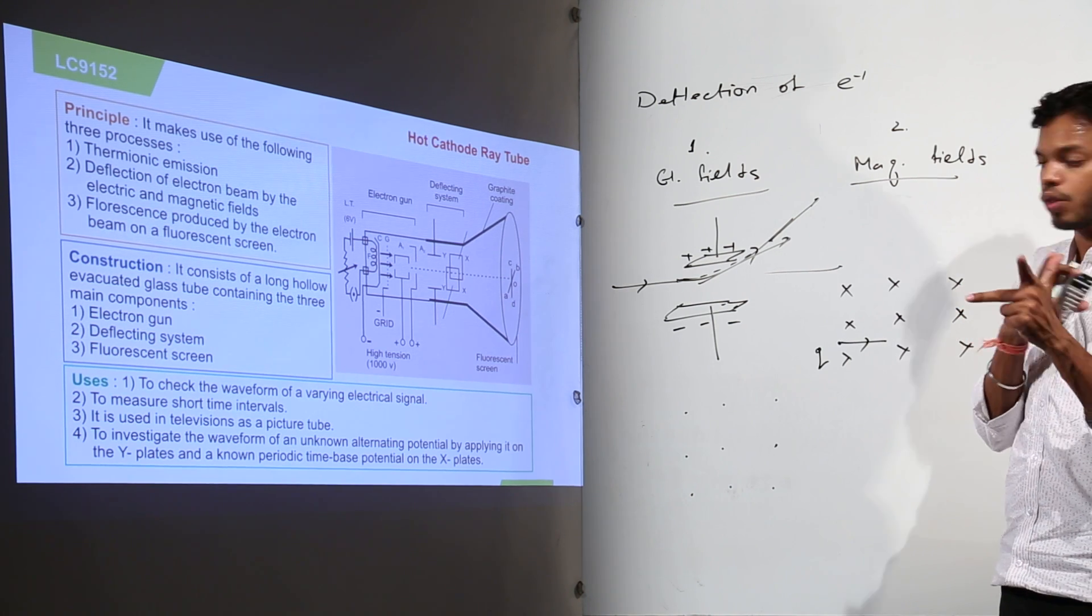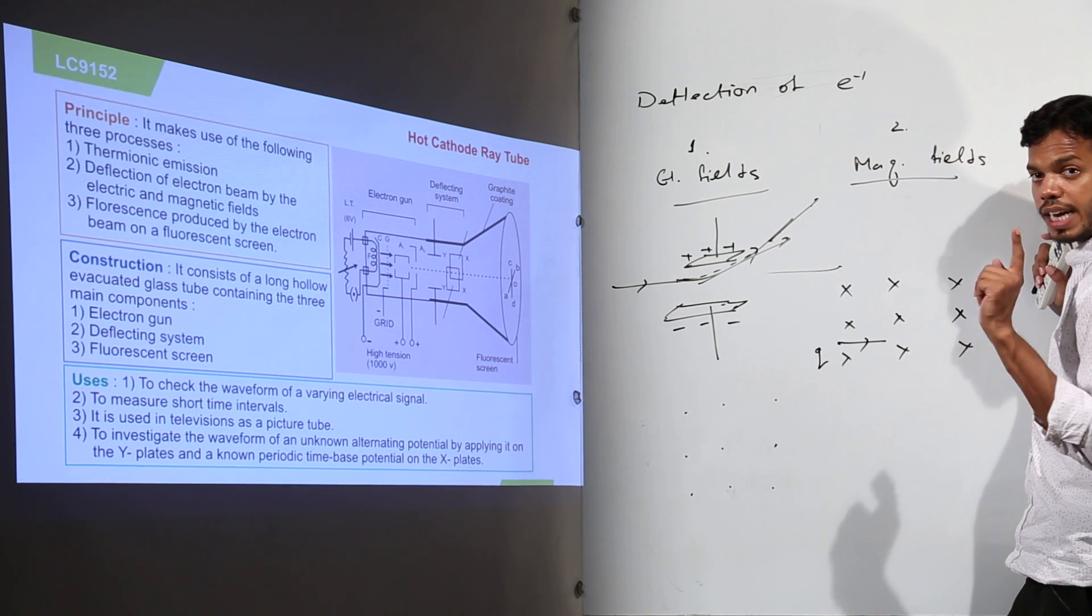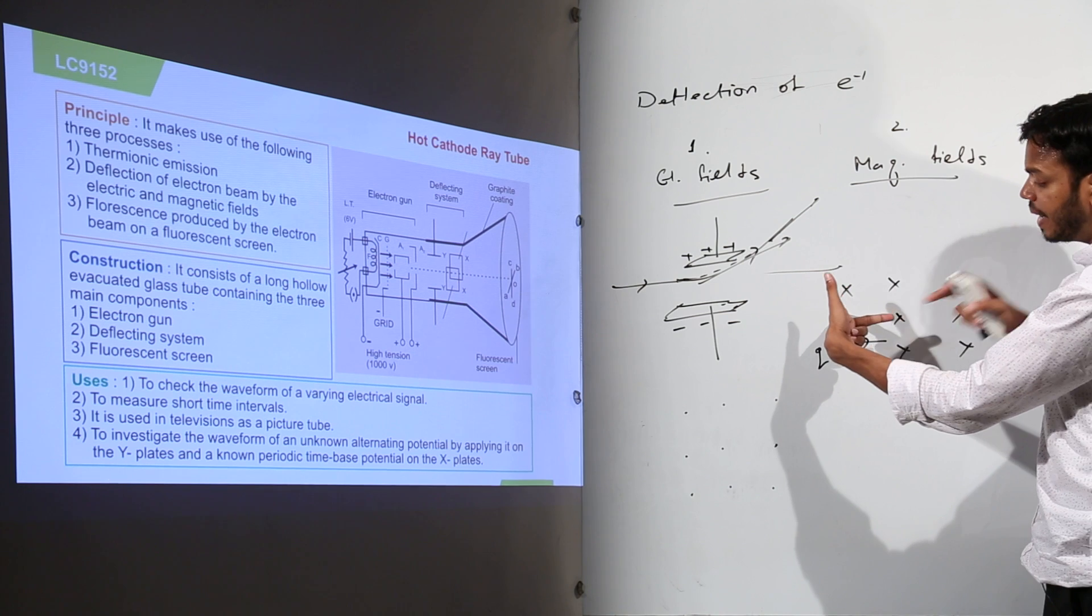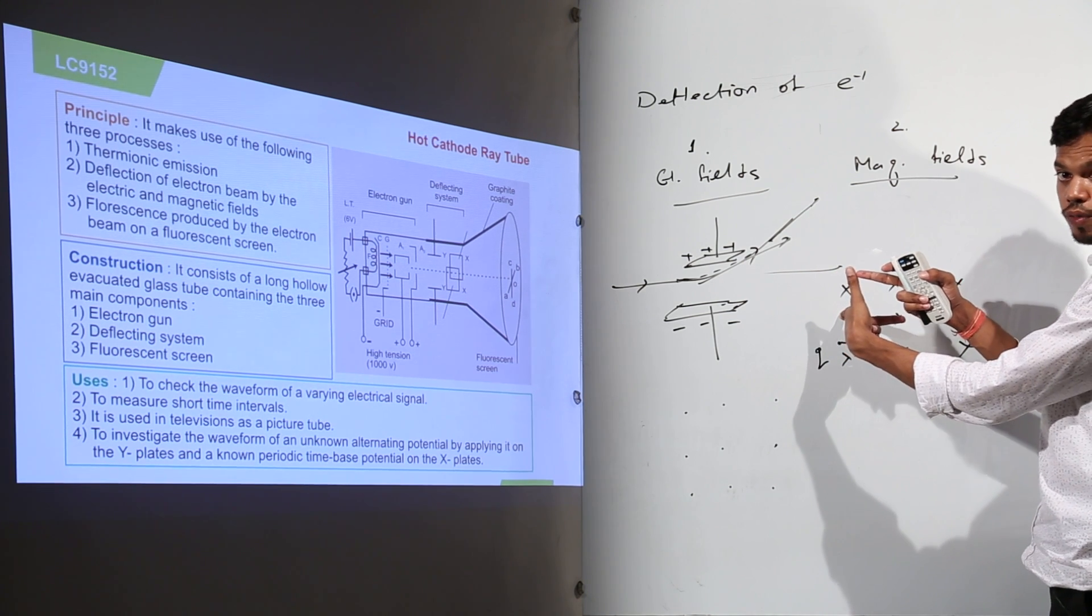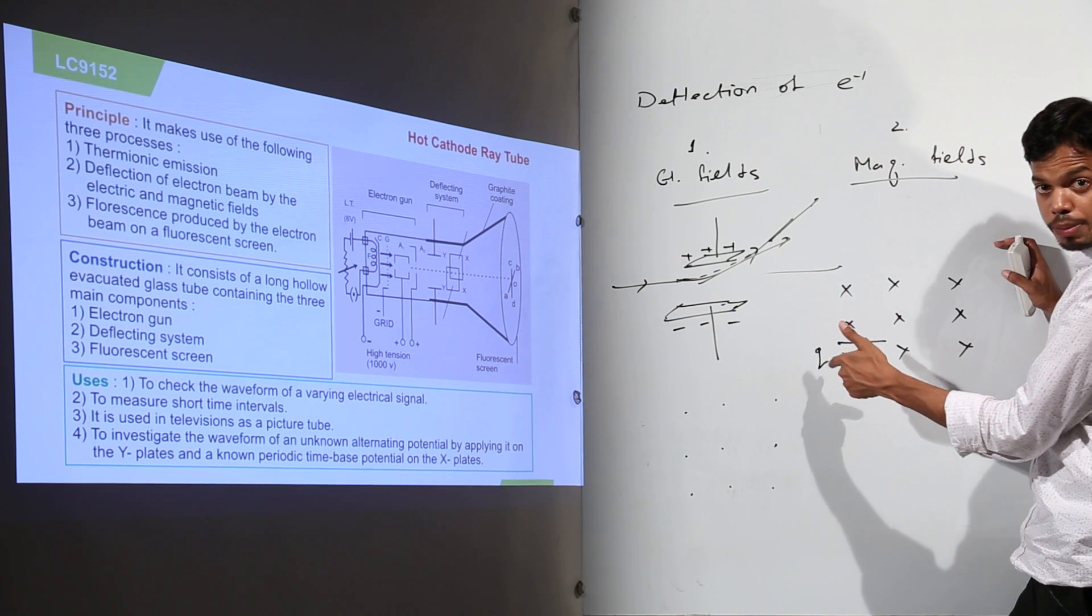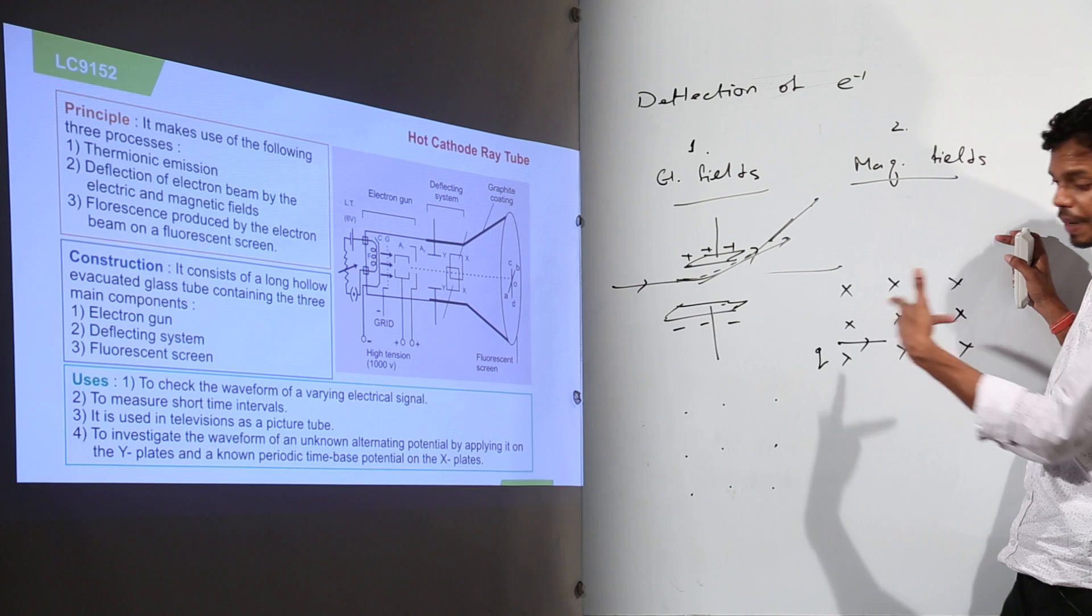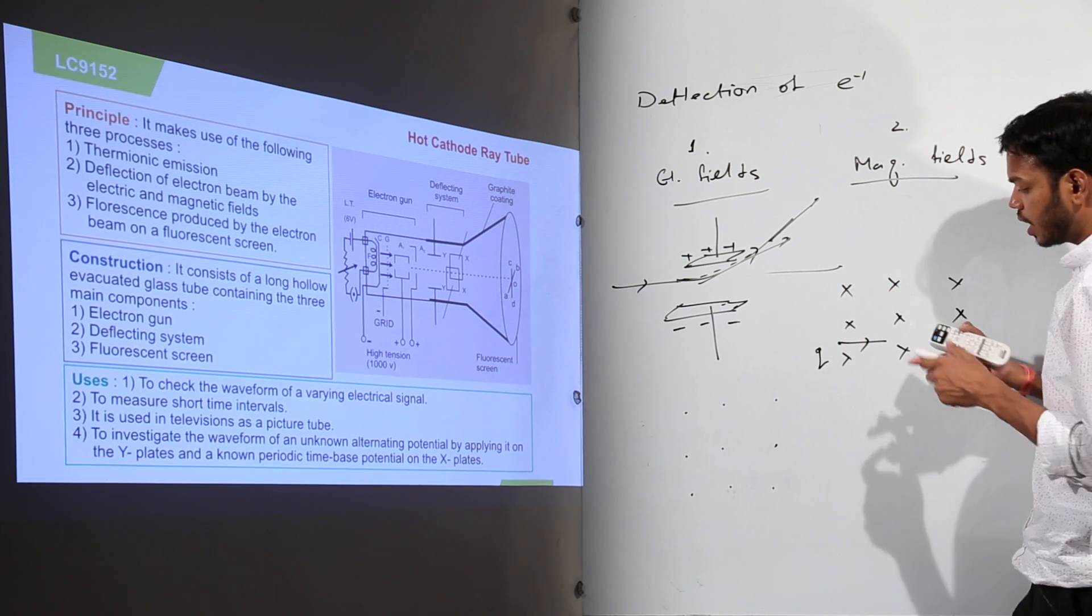That means if you place the thumb, first finger, middle finger of your left hand in three mutually perpendicular directions such that first finger represents field and this finger represents the direction of flow of charge, then thumb will give you the direction of force. So in this picture I have this as the first finger as the direction of magnetic field and middle finger as the direction of flow of charge.